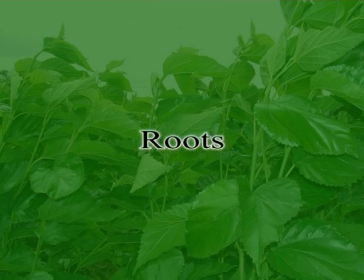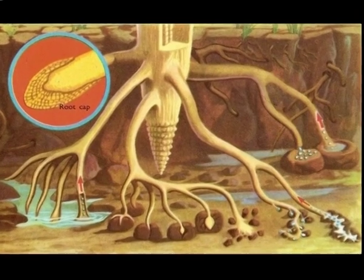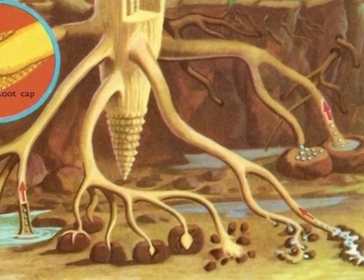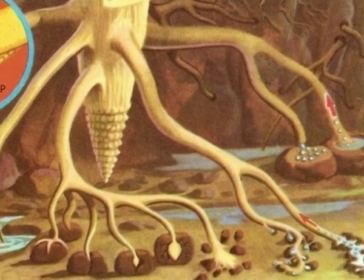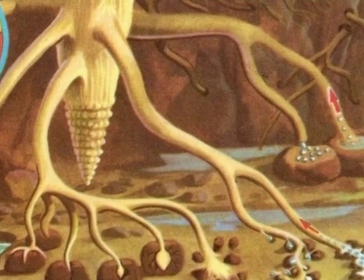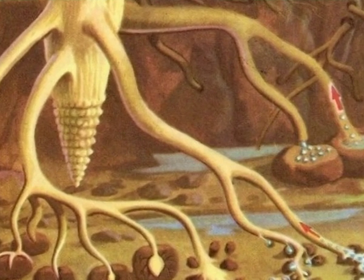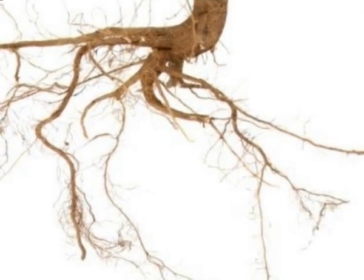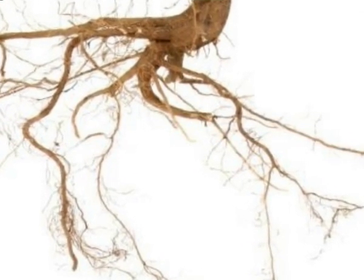Now let us see roots. Roots are radical, come out from the seed coat in the form of a soft structure and move toward the soil, developing to form the primary root. Roots are non-green, underground, positively geotropic, hydrotropic, and negatively phototropic in nature. Roots do not bear buds, nodes, and internodes. Roots have unicellular root hairs.